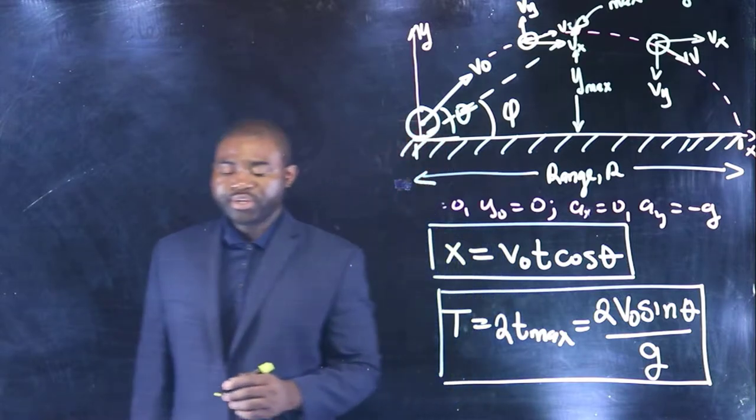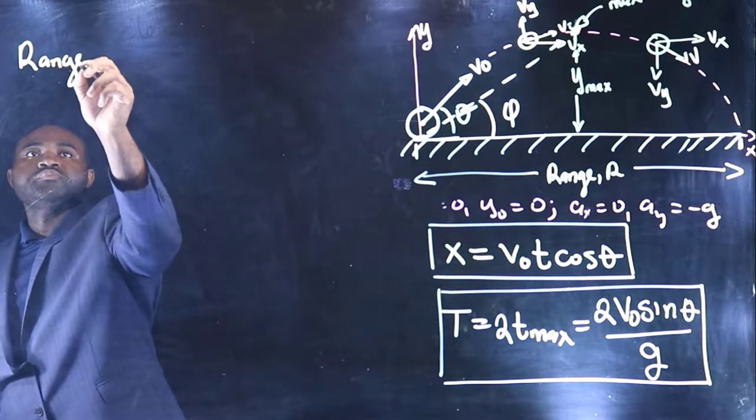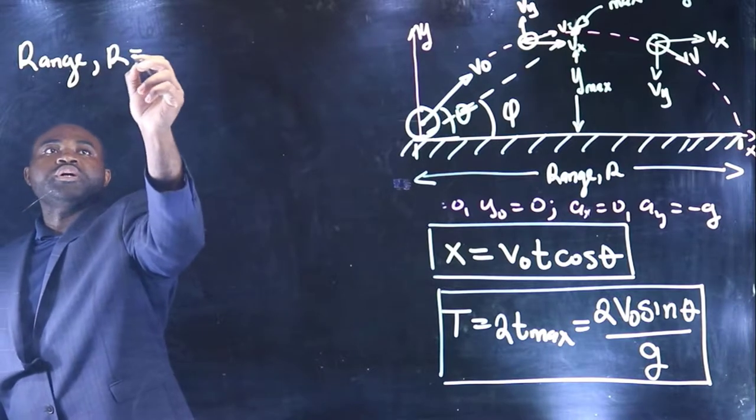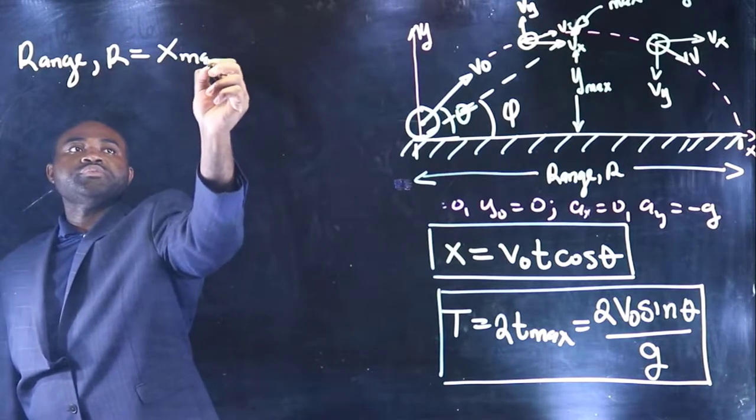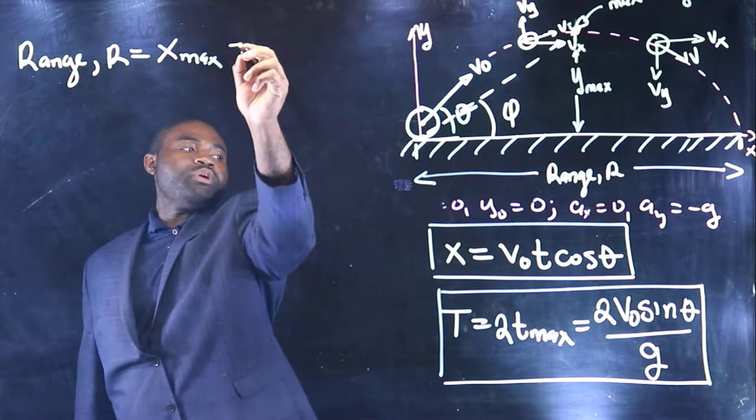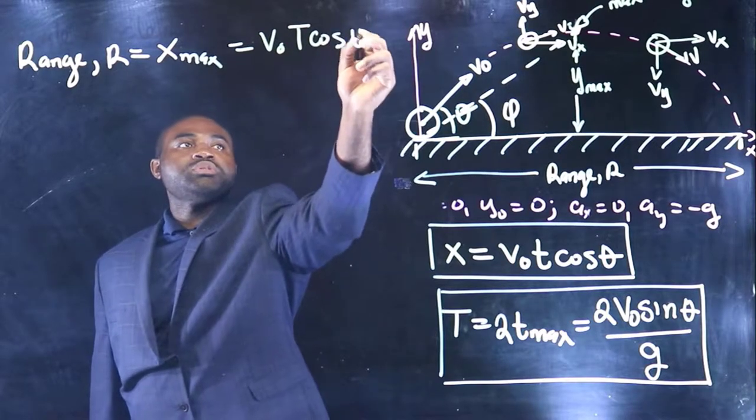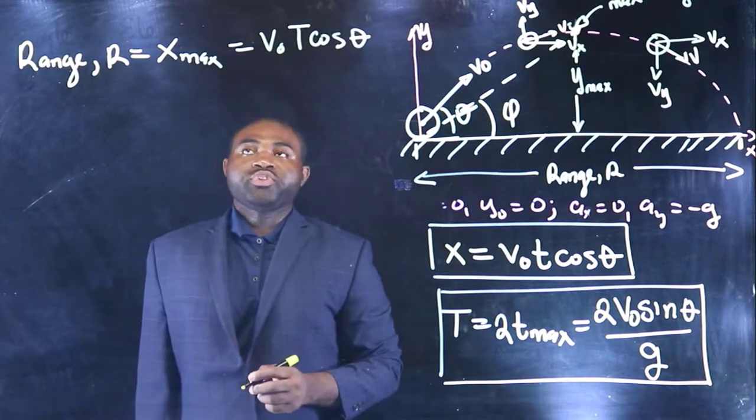So the horizontal range is equal to X max, which will be equal to V naught capital T cosine theta.